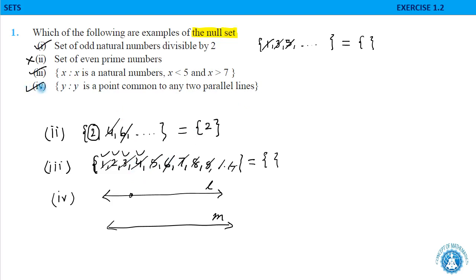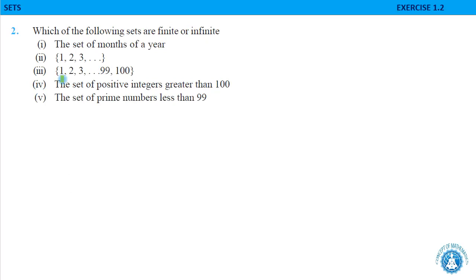Moving to the second question: which of the following sets are finite or infinite? Finite sets are those whose elements are countable — we can count them. For infinite sets, we cannot count the elements; they are uncountable.